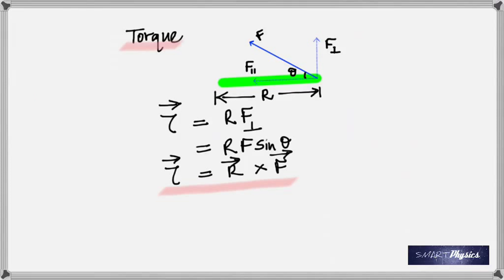The unit is meter-newton — not newton-meter, because newton-meter equals joules (a unit of energy), so keeping it as meter-newton avoids confusion with energy.